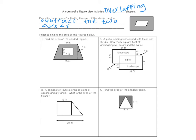In this first example, I see a trapezoid and a rectangle. The formula for a trapezoid is base 1 plus base 2, divided by 2, times the height. So: 10 plus 15 divided by 2, times the height of 8. Ten plus 15 is 25; 25 divided by 2 is 12.5; and 12.5 times 8 gives us 100. The trapezoid has an area of 100 inches squared.